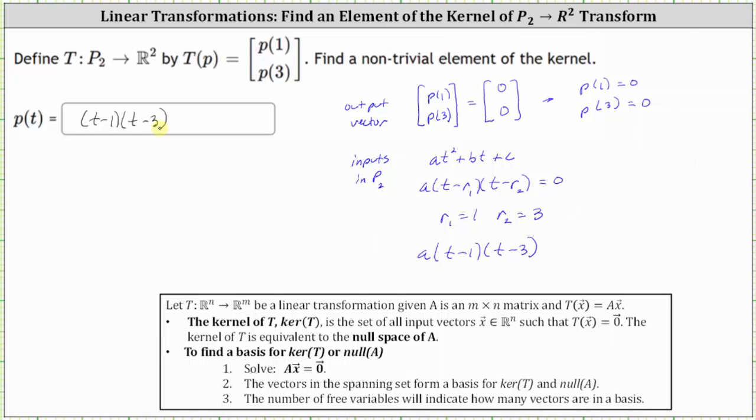But again, any scalar multiple, as long as A is not zero, would work for p of t. I hope you found this helpful.